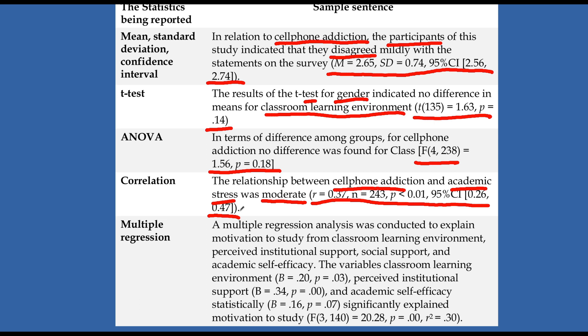And so you can see how things are structured in terms of how you can actually present these things. And then at the bottom here, we have our multiple regression. And so a multiple regression was conducted to explain motivation. So I'm telling you what the outcome variable is motivation to study. This is my outcome variable. And then I start to list all of my different independent variables. So institutional support right here, social support, academic self-efficacy.